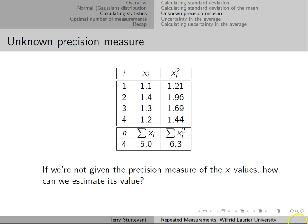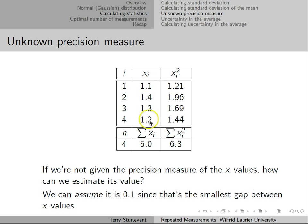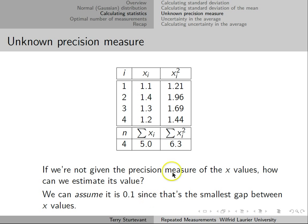One of the things we haven't talked about is the precision measure of the data values. If we're not given the precision measure, how can we estimate it? In this case, all values are given to one decimal place, so the distance between each is 0.1. Since none of these are closer than 0.1 from any other, we can assume the precision measure is 0.1, as that's the smallest gap between values.